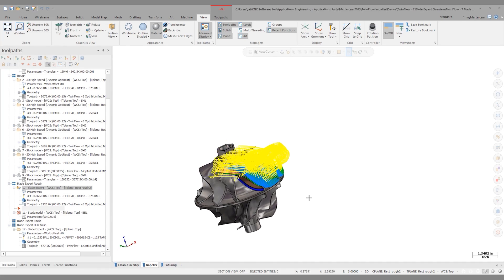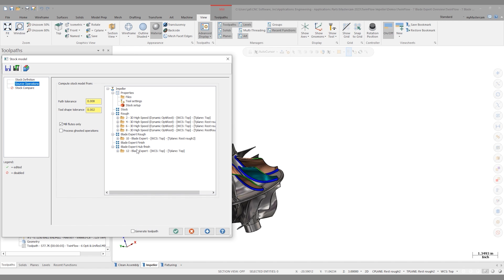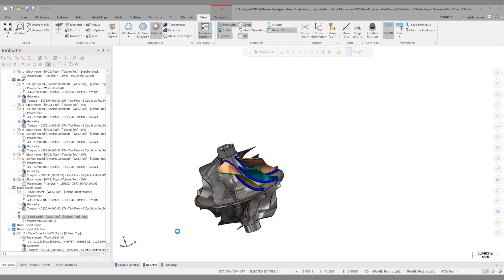So with that initial rough done with the 3/8 ball end mill, let's regenerate this stock model. We'll come to the source operations and pick that BladeXpert operation that we had just created. I'll click Generate Toolpath and click OK. There we go. So with the stock model regenerated, I can click on this BladeXpert operation and copy it after the stock model.